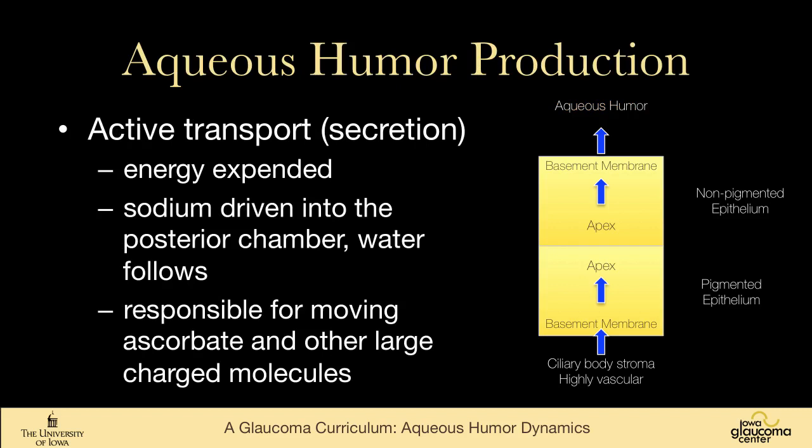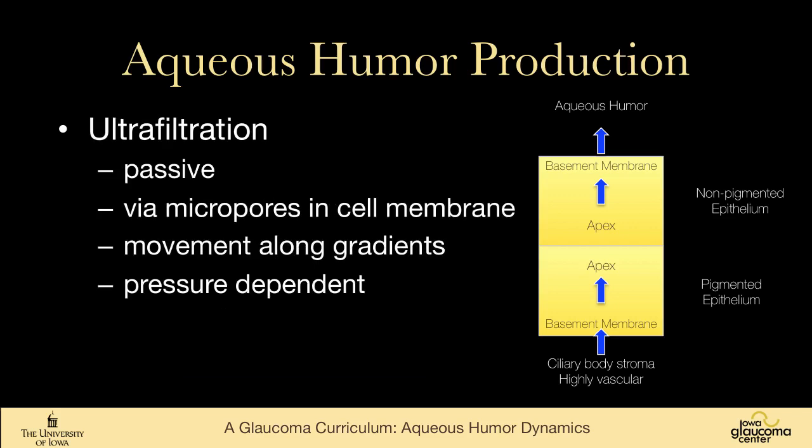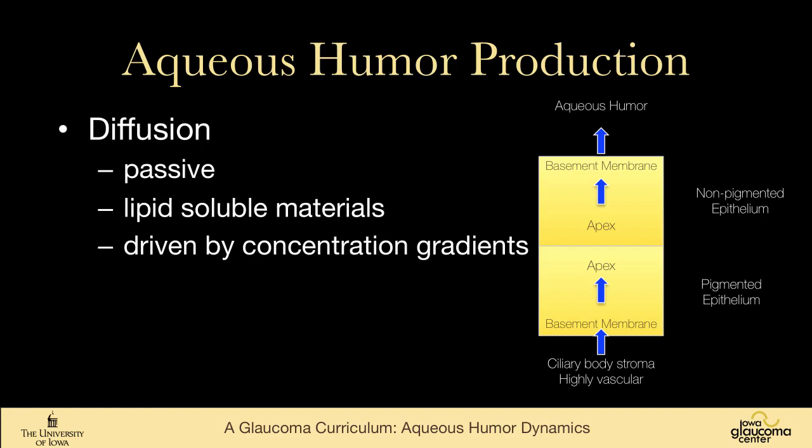Active transport, or secretion, requires energy. Sodium is driven into the posterior chamber and water follows; this is also responsible for moving ascorbate and other large charged molecules into the aqueous humor. Ultrafiltration is passive — fluid moves via micropores in the cell membranes along gradients, and is pressure-dependent. Diffusion is also passive, with lipid-soluble materials driven by concentration gradients.